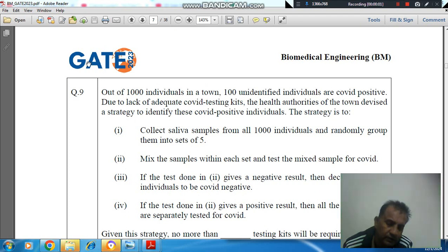Hello, welcome again. We are solving a general aptitude problem in Biomedical Engineering. Out of 1000 individuals in a town, 100 unidentified individuals are COVID positive. Due to lack of adequate COVID testing kits, the health authorities of the town devise a strategy to identify these COVID positive individuals.